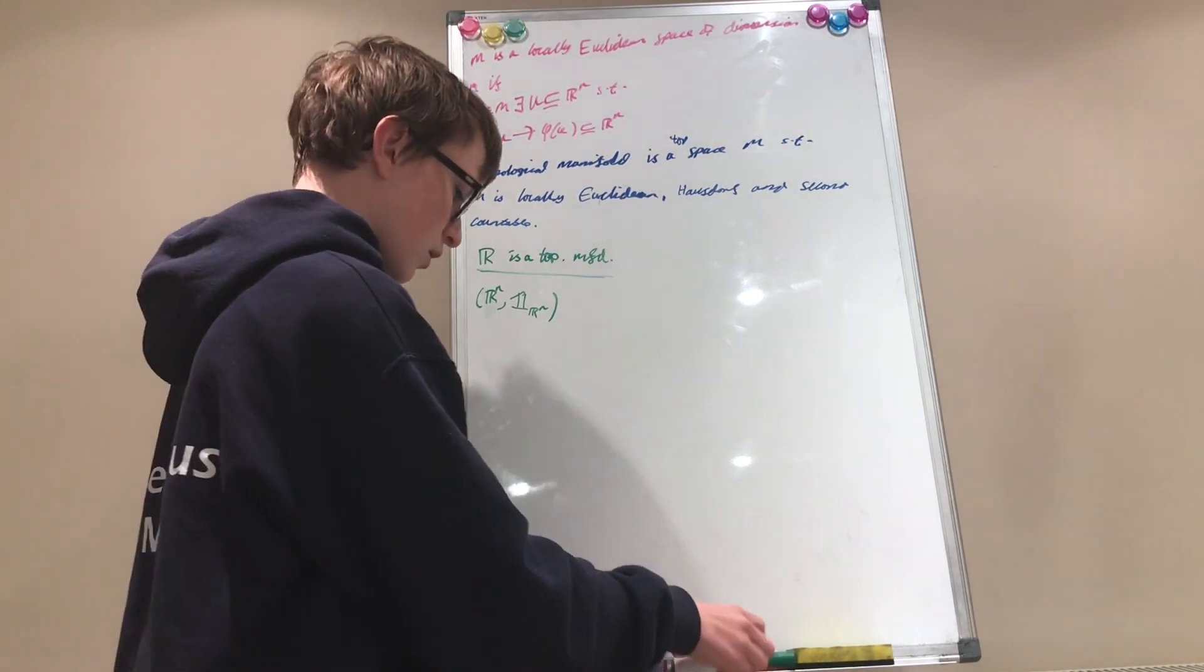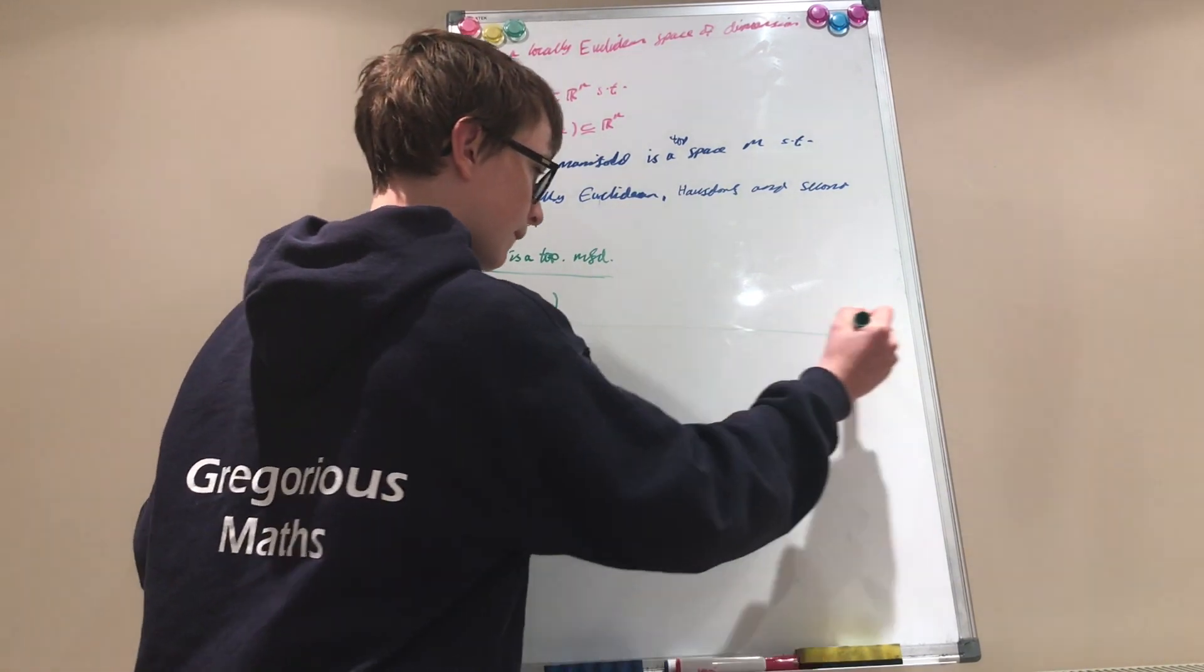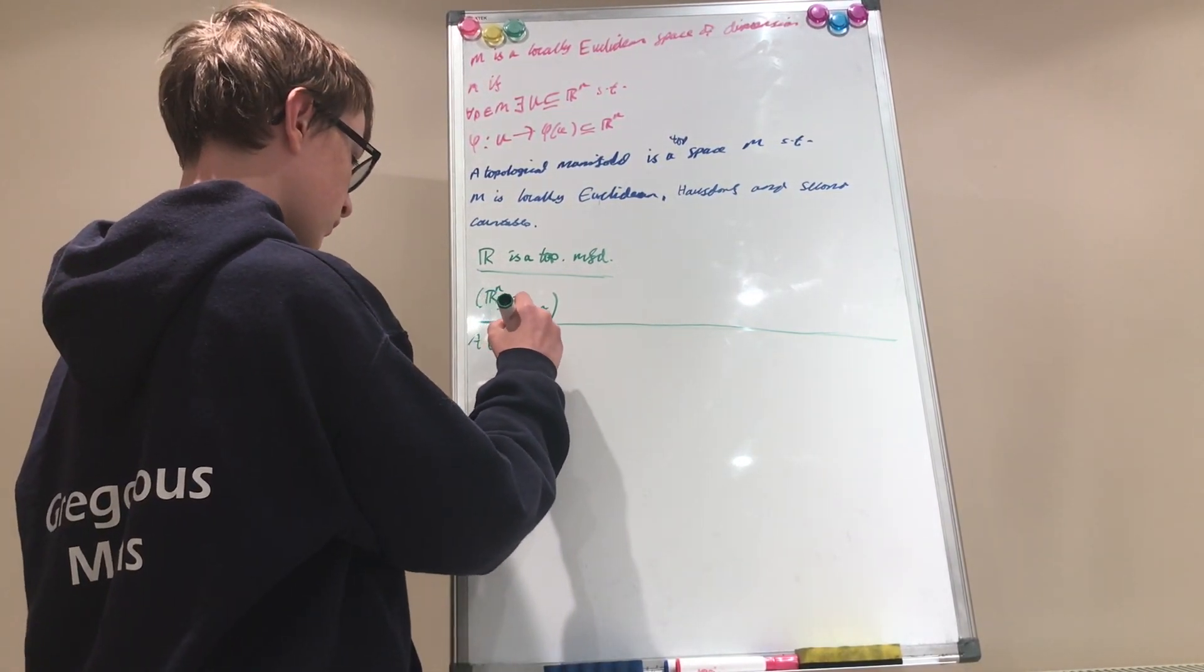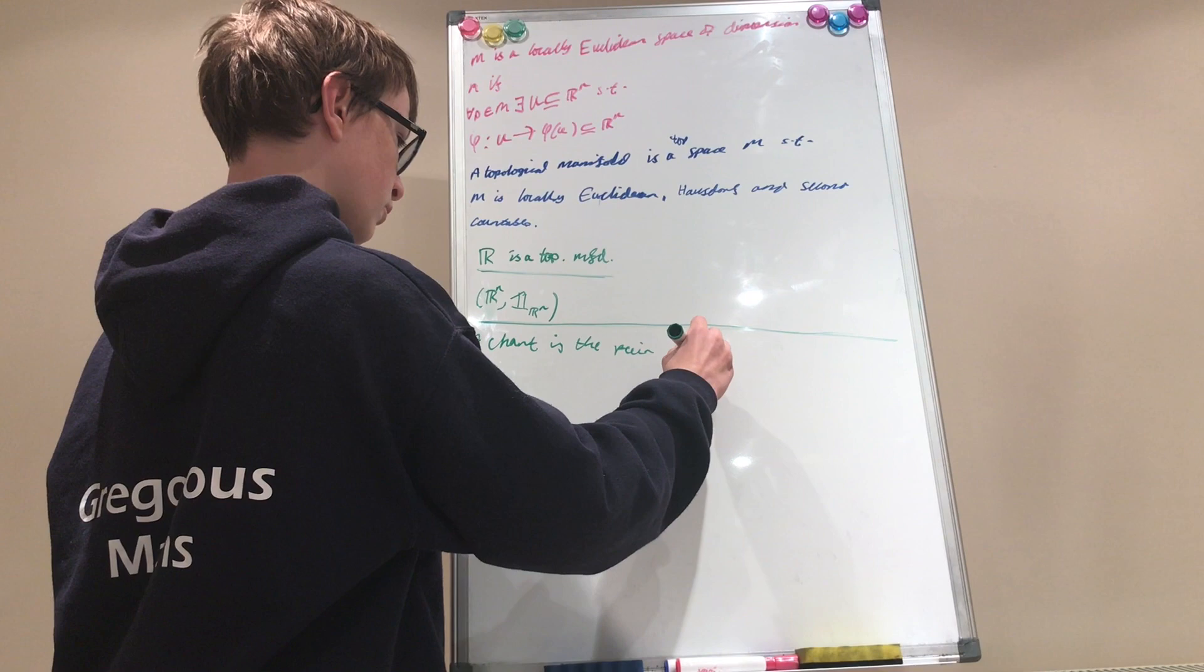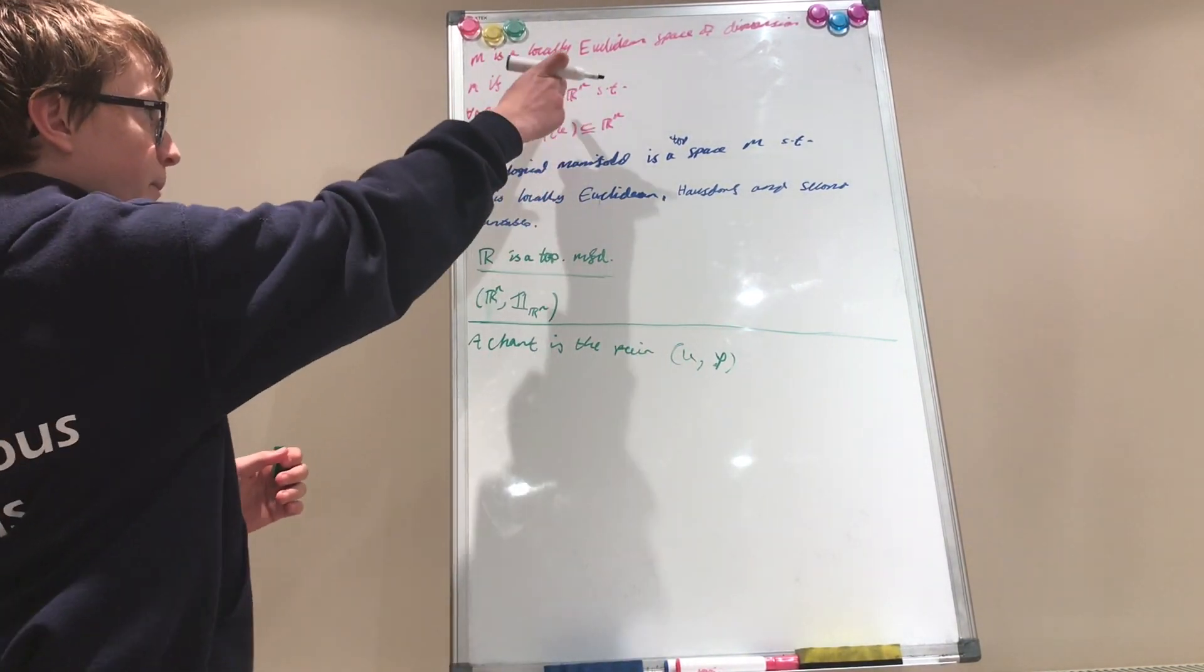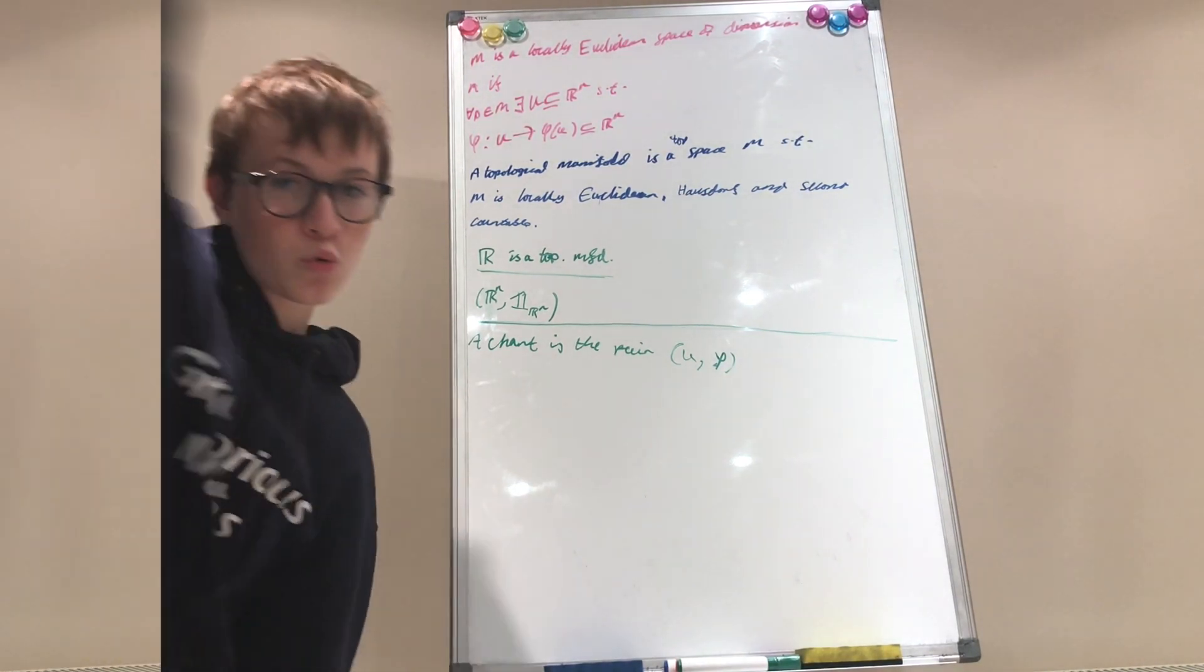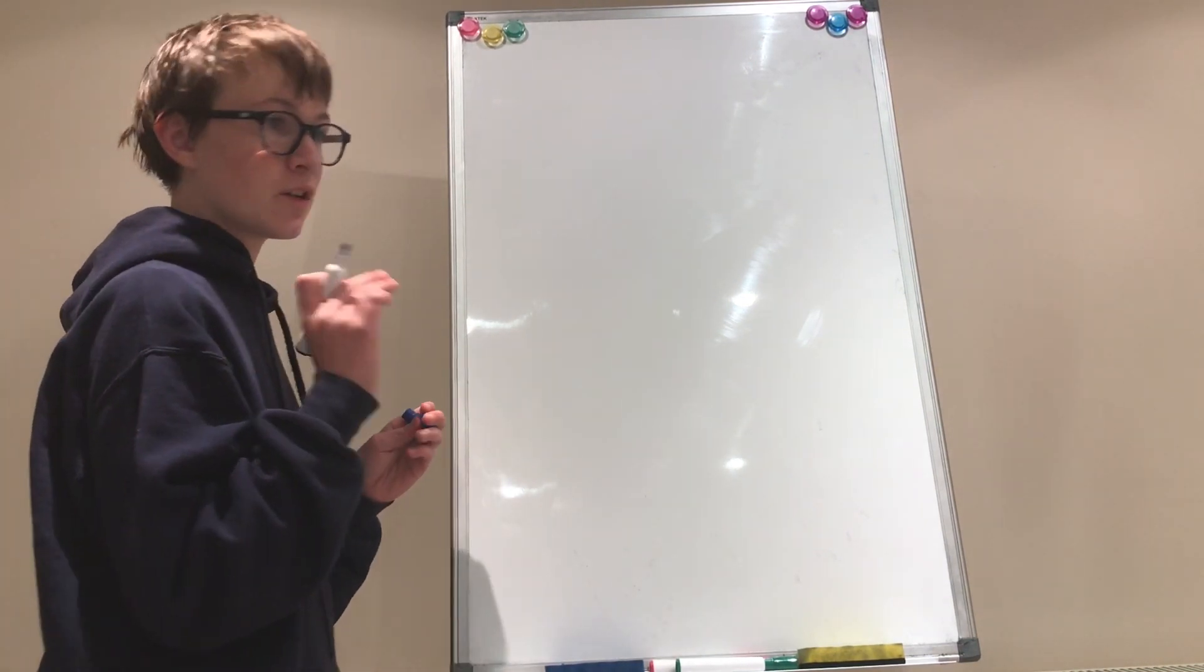Okay. Now, this is a very fitting example because we define a chart is the pair U, phi, which we defined here. It's the pair U, phi. And now, to finish off the video, I will define what an atlas is.